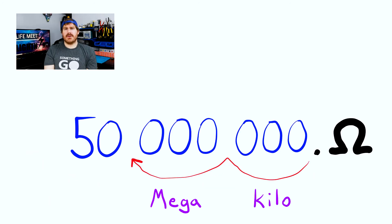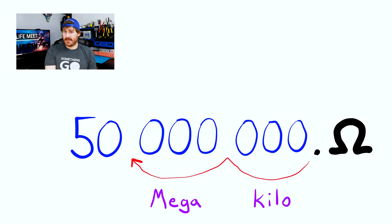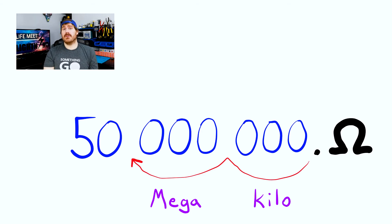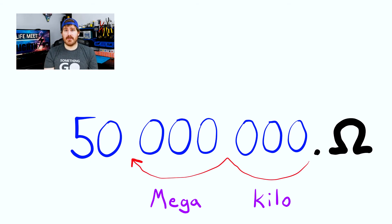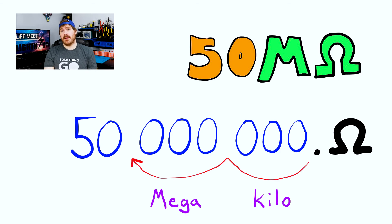Let's do another conversion using the decimal moving method. Convert 50 million ohms to shorthand using a prefix and a unit symbol. Skipping over twice by sets of three, we come to 50 megaohms.